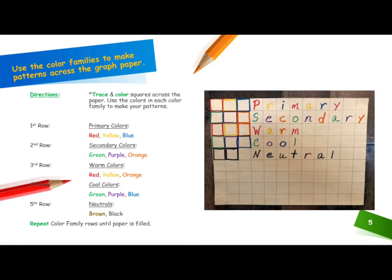In the third row, warm colors: red, yellow, orange. In the fourth row, cool colors: purple, green, blue. And in the fifth row, you use neutral colors: brown and black. Repeat color family rows until your paper is filled.